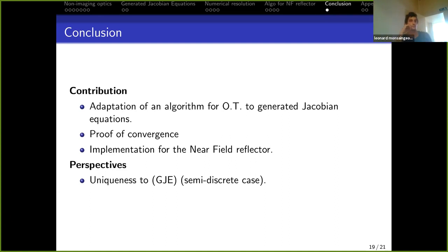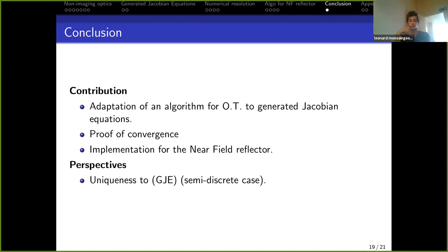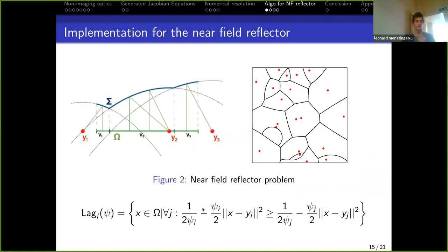Q (from Max): Is this not like an optimal transport problem with an additional constraint on the structure of the transport map — e.g., a Monge problem restricted to piecewise linear functions? A: The generated Jacobian equation is a Monge-Ampère equation, but one can show that when the Laguerre cells have this particular form they cannot be written as an optimal transport problem. It is indeed slightly more general, which is why we need the generated Jacobian equation framework. There is a good survey covering the whole framework if you want to learn more.